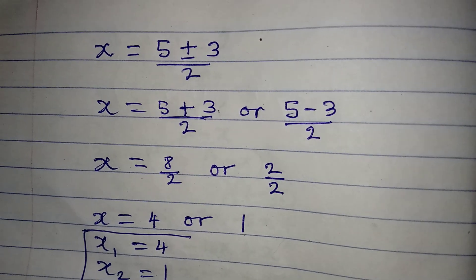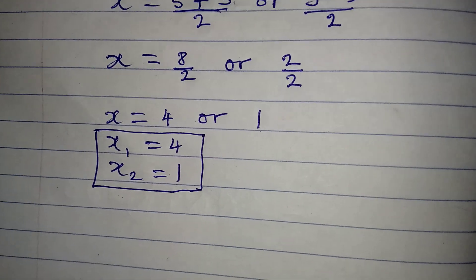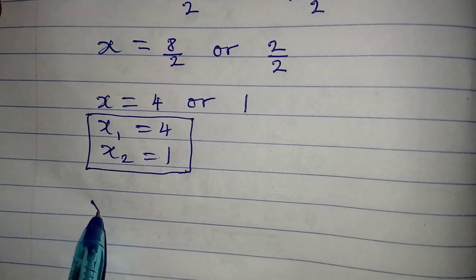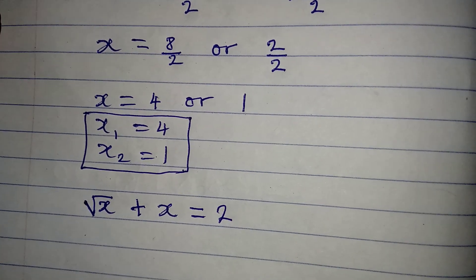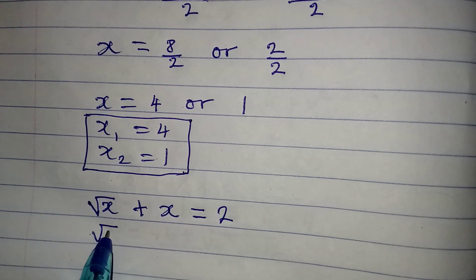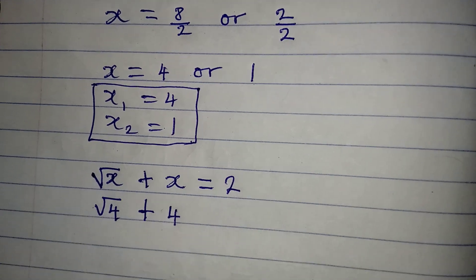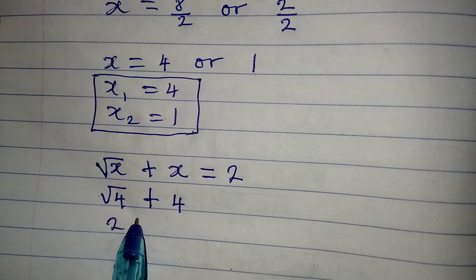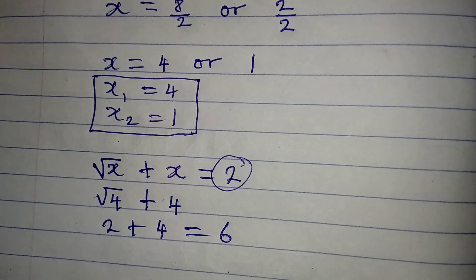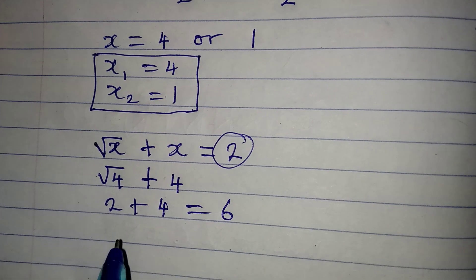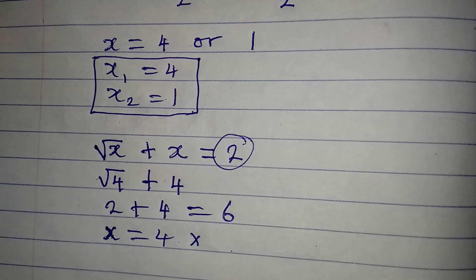According to our working, these are the two solutions, but we need to verify they satisfy the original equation: square root of x plus x equals 2. Putting in x equals 4: square root of 4 plus 4 equals 2 plus 4, which gives 6, not 2. So x equals 4 does not satisfy the equation.